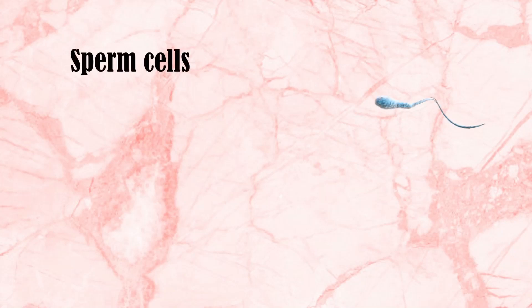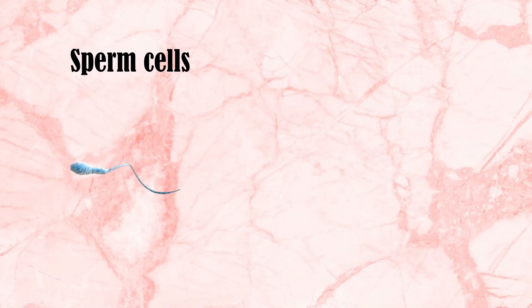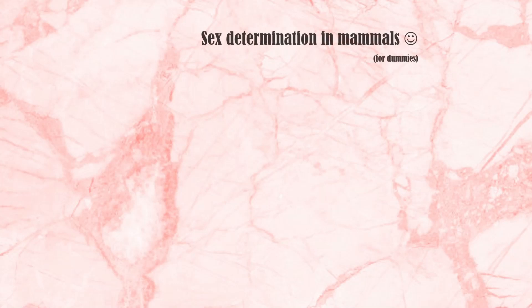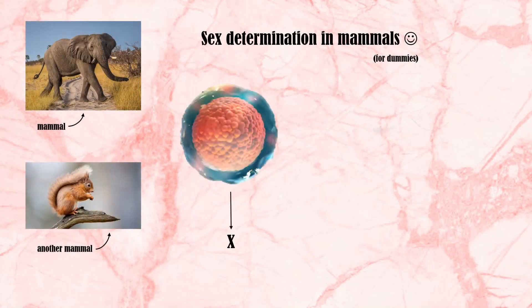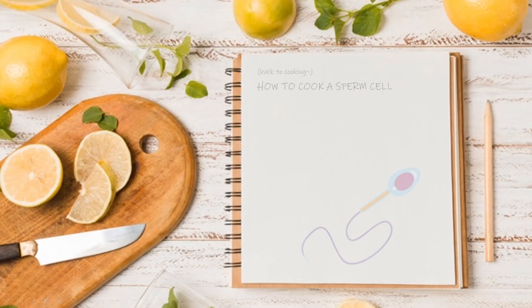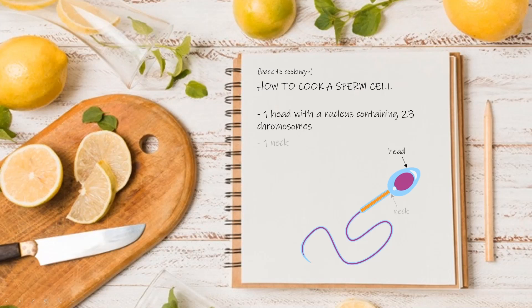The SRY gene is expressed by sperm cells. These are a motile form of the male gamete that are produced in the gonads of male human beings and animals. In mammals, the sex of the descendants is determined by the sperm cell, which can carry either an X or a Y chromosome. Sperm cells are composed of a head containing the nucleus, a neck, a middle piece that provides energy, and a tail for motility.